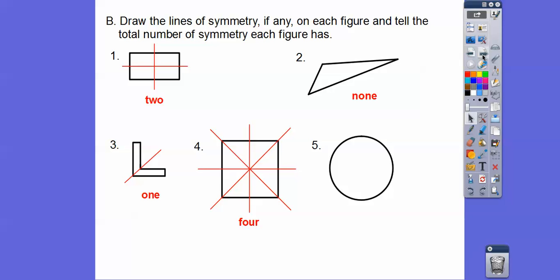What about a circle? How many lines of symmetry does a circle have? Infinite. Circles have infinitely many lines of symmetry.